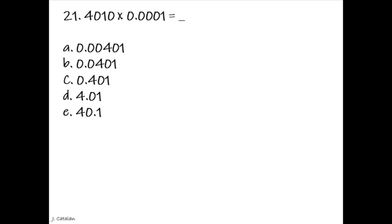Question. 4,010 times 0.0001 is equal to underscore. Answer. 0.401.